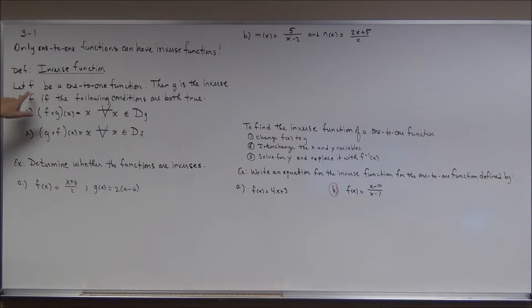An inverse function, let f be a one-to-one function, important. Then g is the inverse of f if the following conditions are both true. That if you compose them in either order, f circle g of x, g circle f of x, that you get the identity function, which is x.